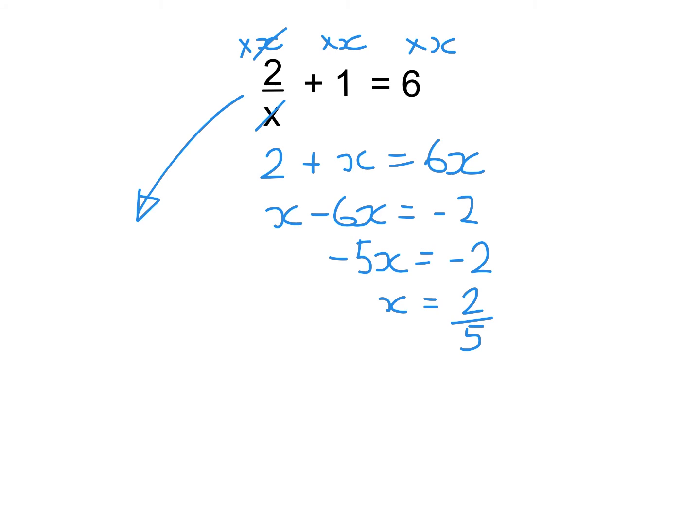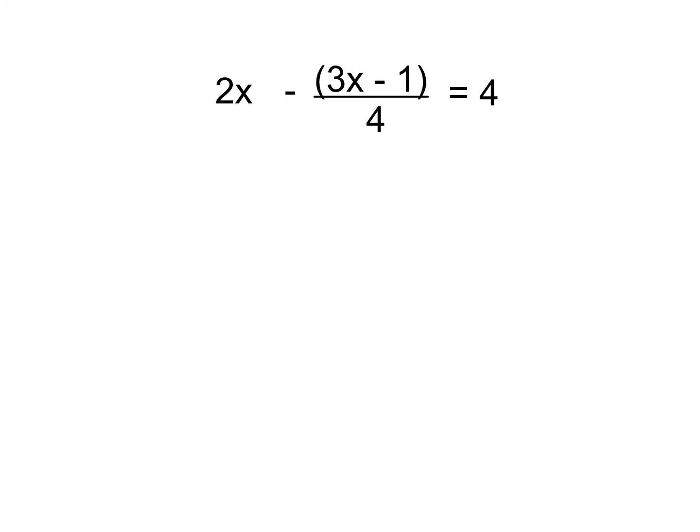Now the other way we could have done here is just move the 1 first of all. And so, right, well, 2 over x equals 6 take away 1, which is 5. And then just cross multiply. 2 equals 5x. 2 over 5 equals x. But as I said, I'm sticking to this one method for all my examples. Nearly there. Nearly there. One more. Two more.